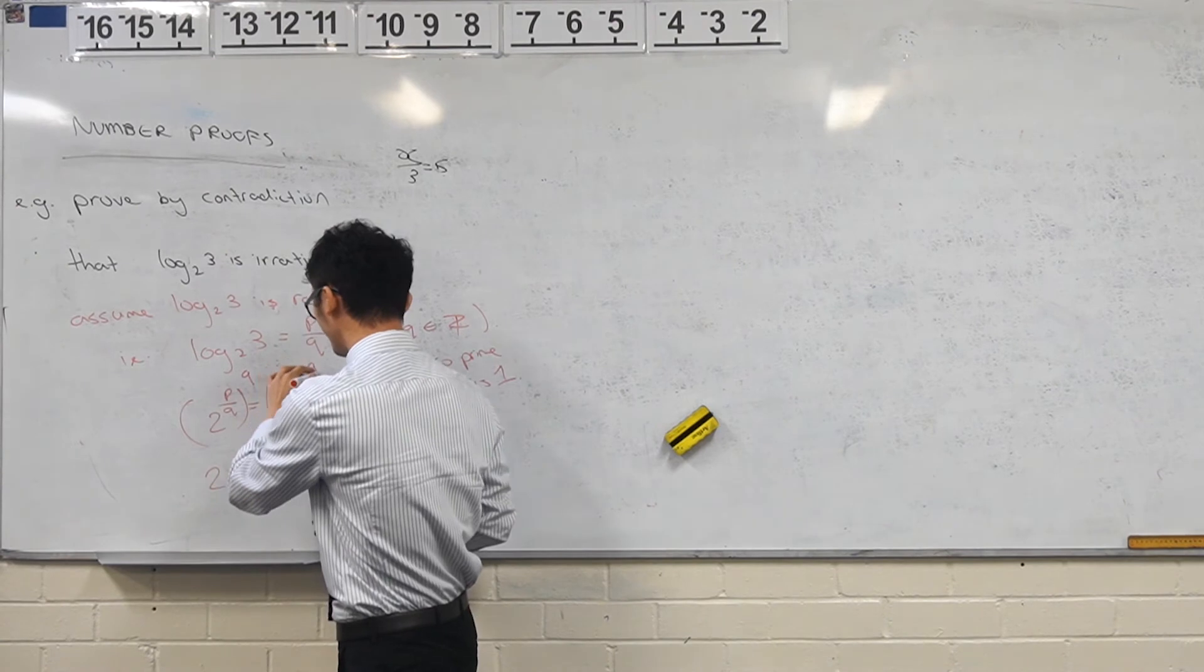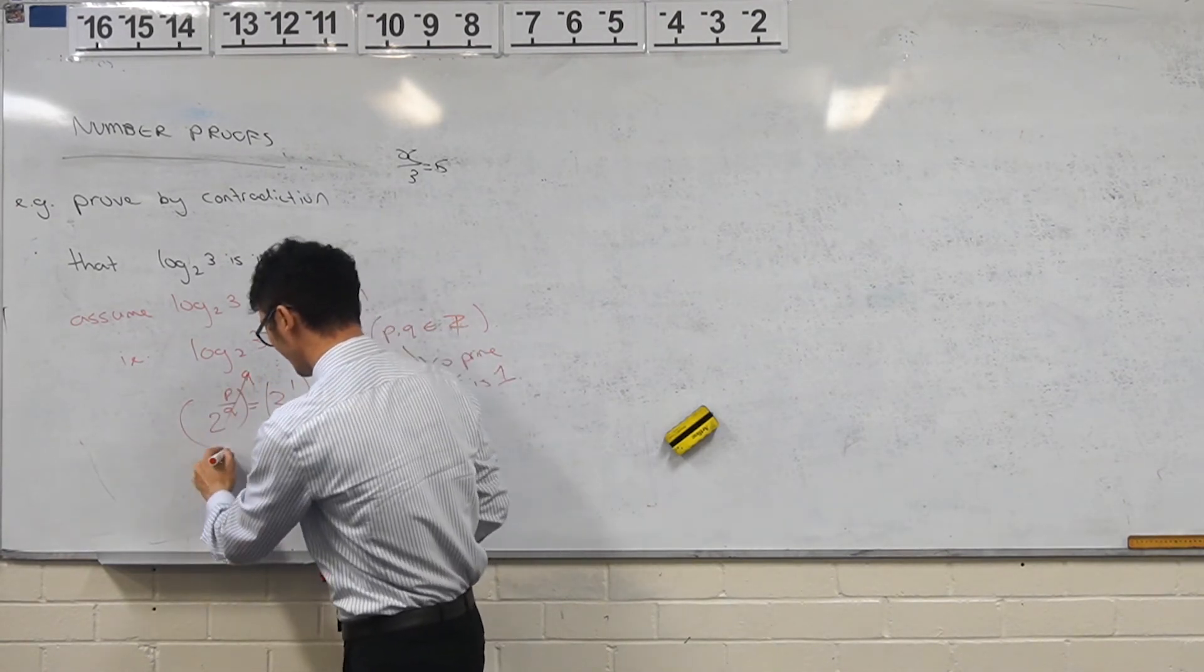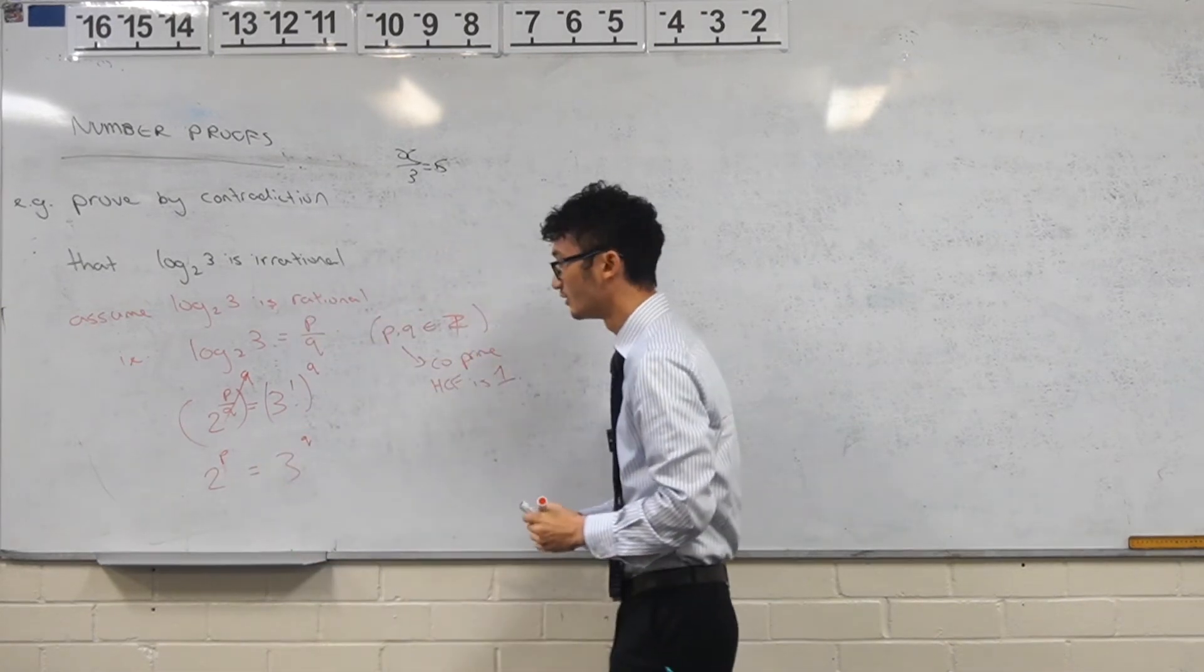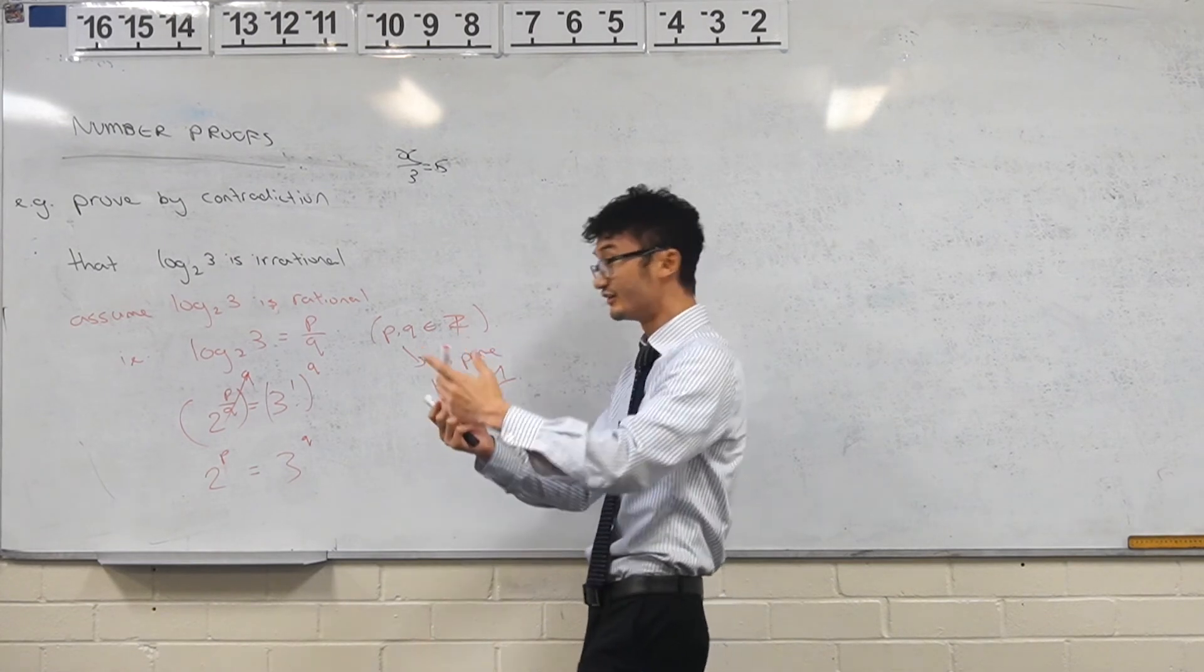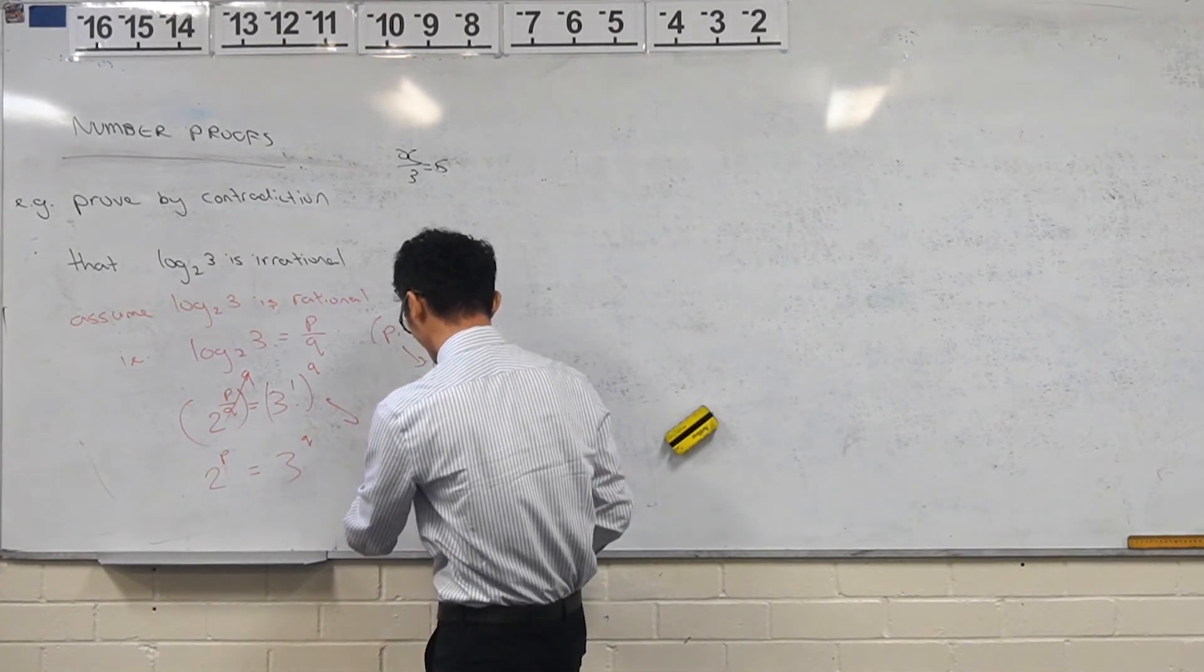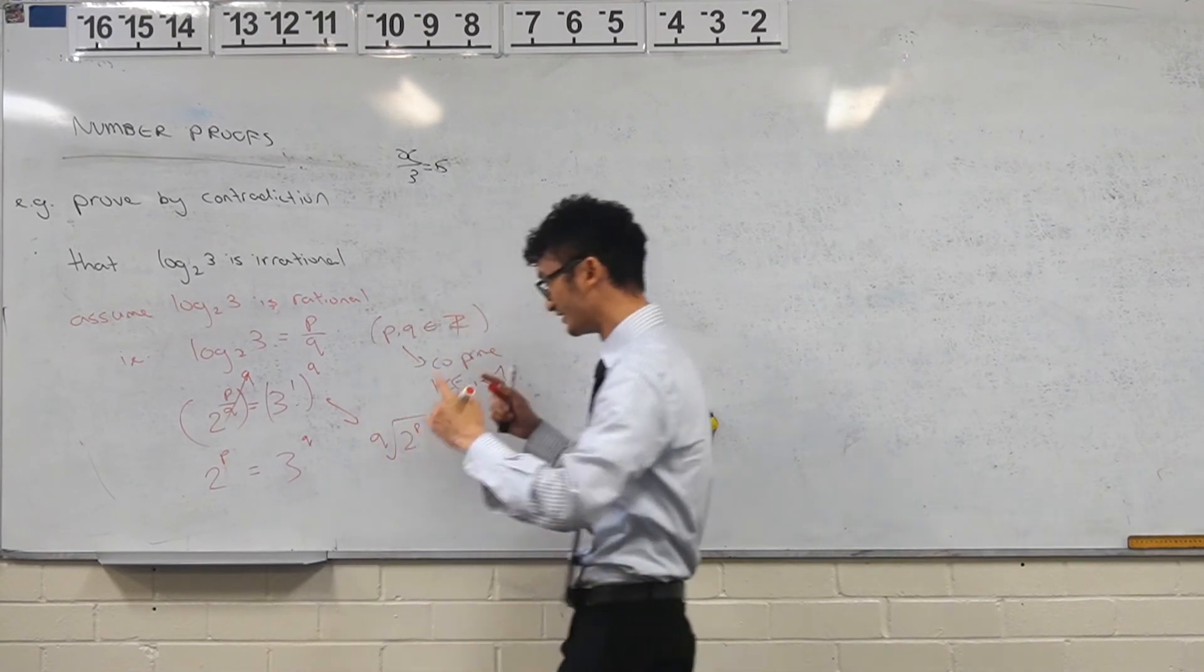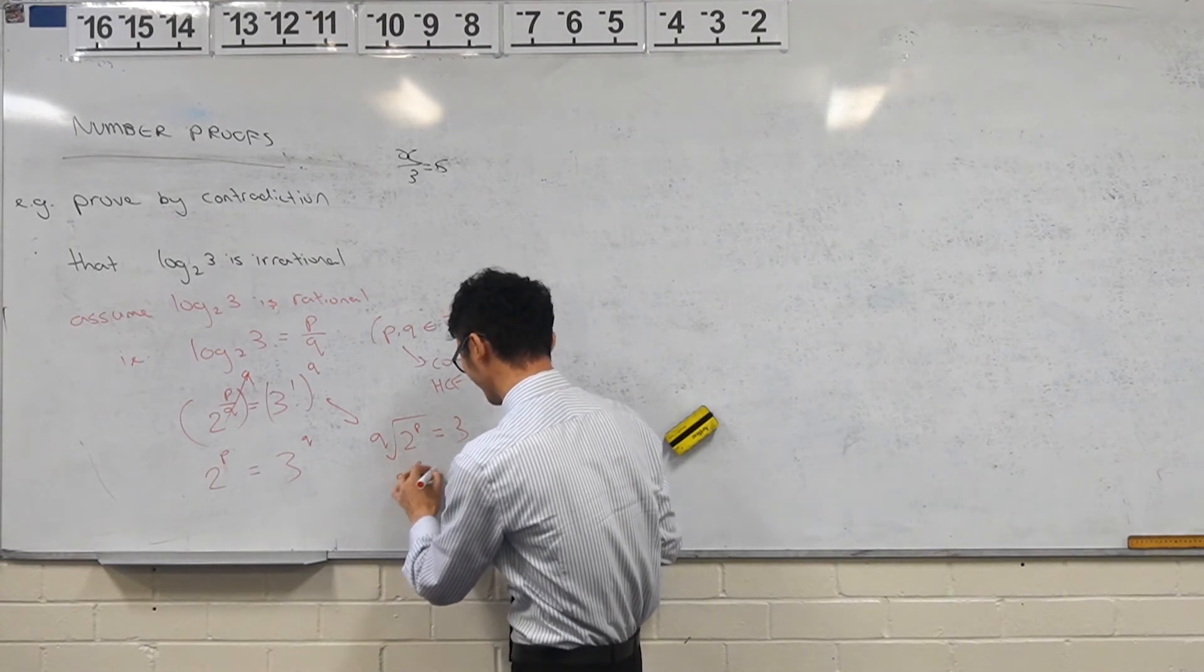Yeah, raise both sides to the power of q. And what I'll end up with is that these two will divide through. And I'll just end up with 2 to the power of p. What's the same thing as putting it into the square root form when you take both sides to the power of q? Oh yeah, then you could have done that too. Yeah, yeah, yeah. So if you had the qth root of 2 to the power of p, and then you raise both sides to q. Right, yeah, okay.